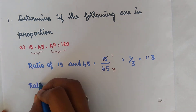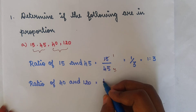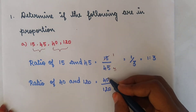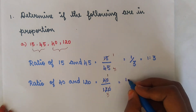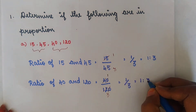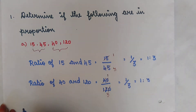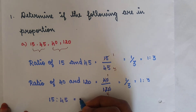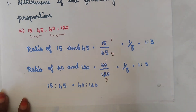Next, we find the ratio of the other two numbers: 40 and 120. We simplify 40 divided by 120. Cancelling the zeros, then dividing by 4: 1 four is 4, 3 fours are 12. So here also we get 1 by 3, that is 1 is to 3. Comparing the two ratios, they are the same. So 15 is to 45 equals 40 is to 120.